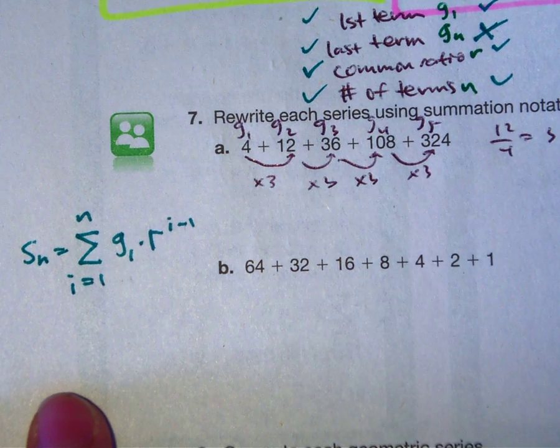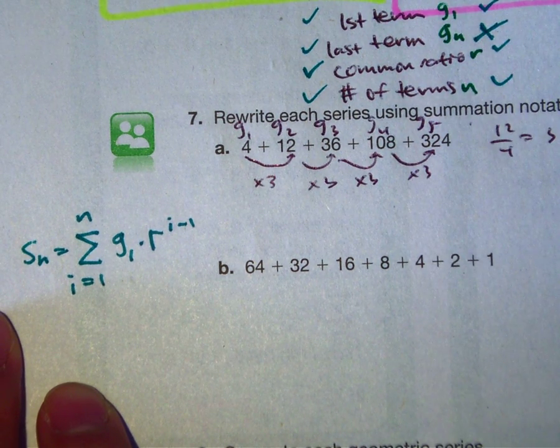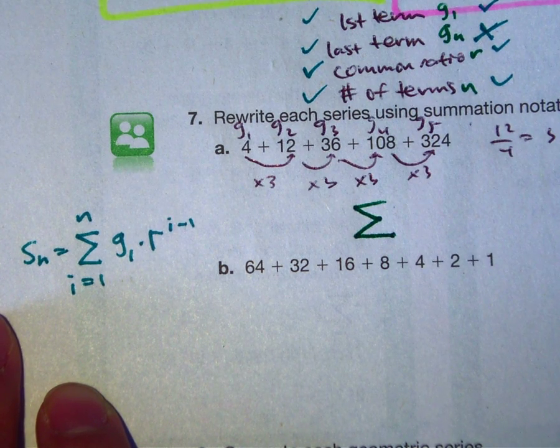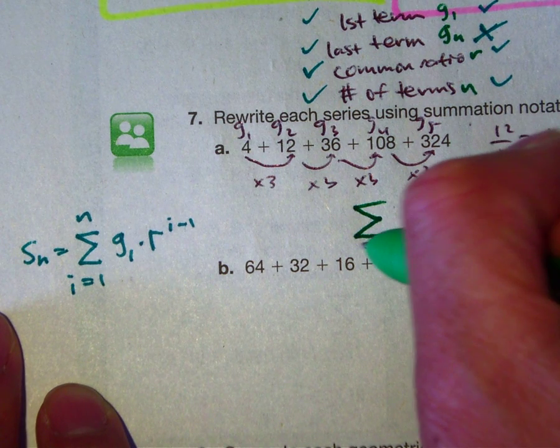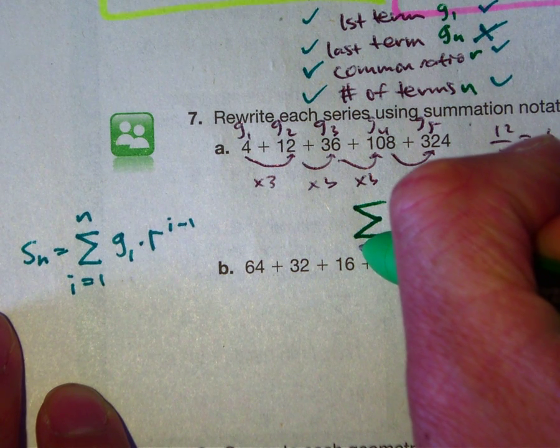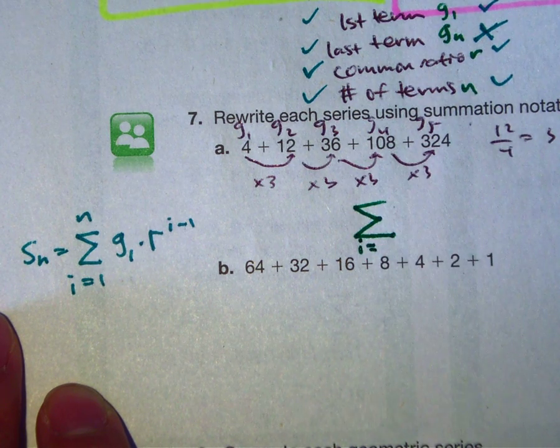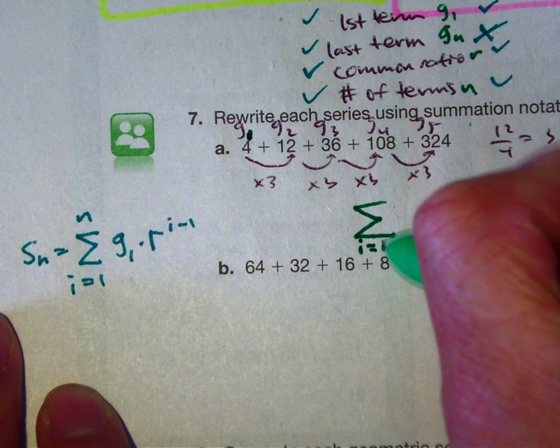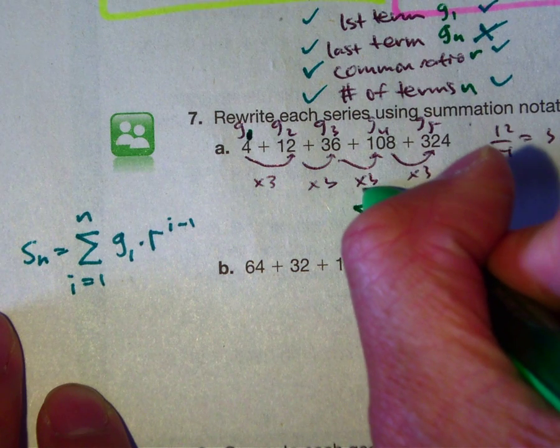Now it's telling me to write this in summation notation. So if I draw a summation notation symbol, the bottom tells me where to start or end. What number am I going to start with? 1. You see this 1 right here? And what number am I going to end? 5. That would be a 5.